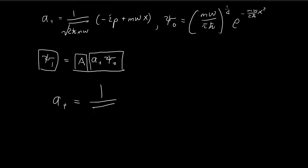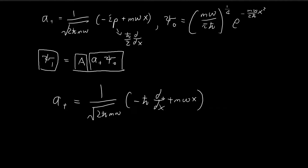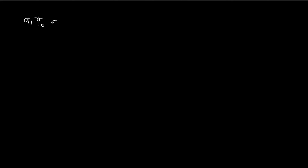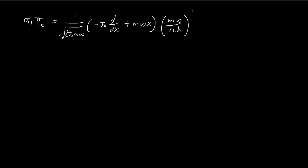The positive operator can be rewritten and is essentially a derivative. The momentum operator p equals ℏ/i · d/dx, and adding negative i gives us negative ℏ·d/dx + mωx. This is your positive operator — it applies a derivative to the function and also multiplies mωx to it. So now we compute a+ξ₀. We have all these constants, the operator (−ℏ·d/dx + mωx), applied to ξ₀, which equals e to the power of −mω/(2ℏ)·x².